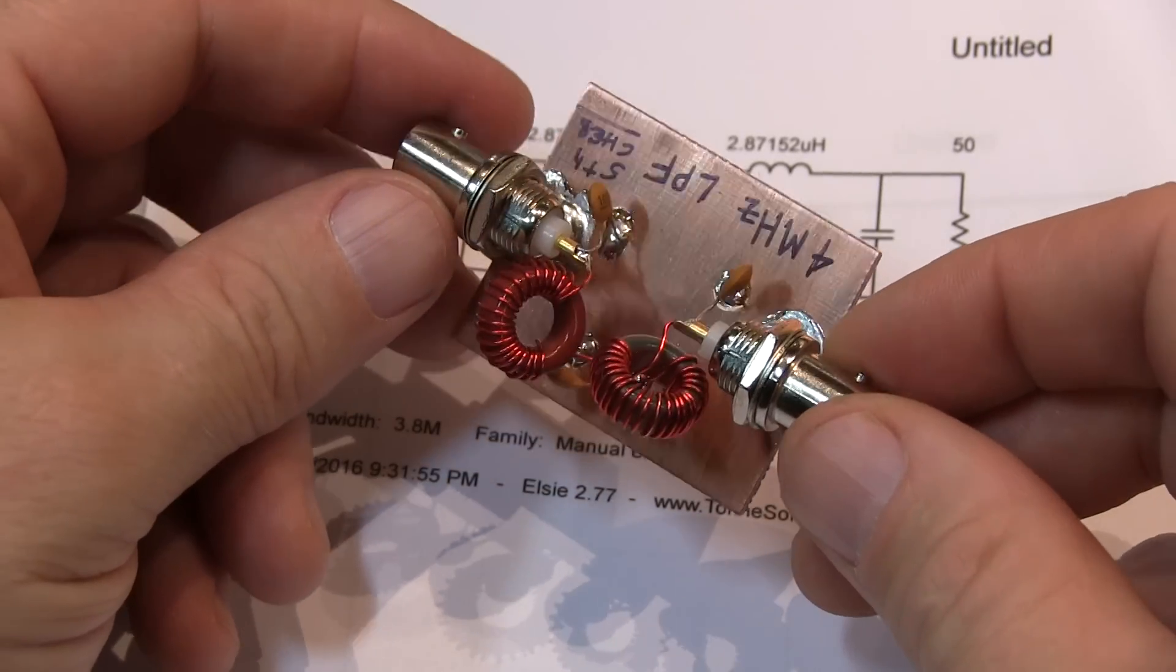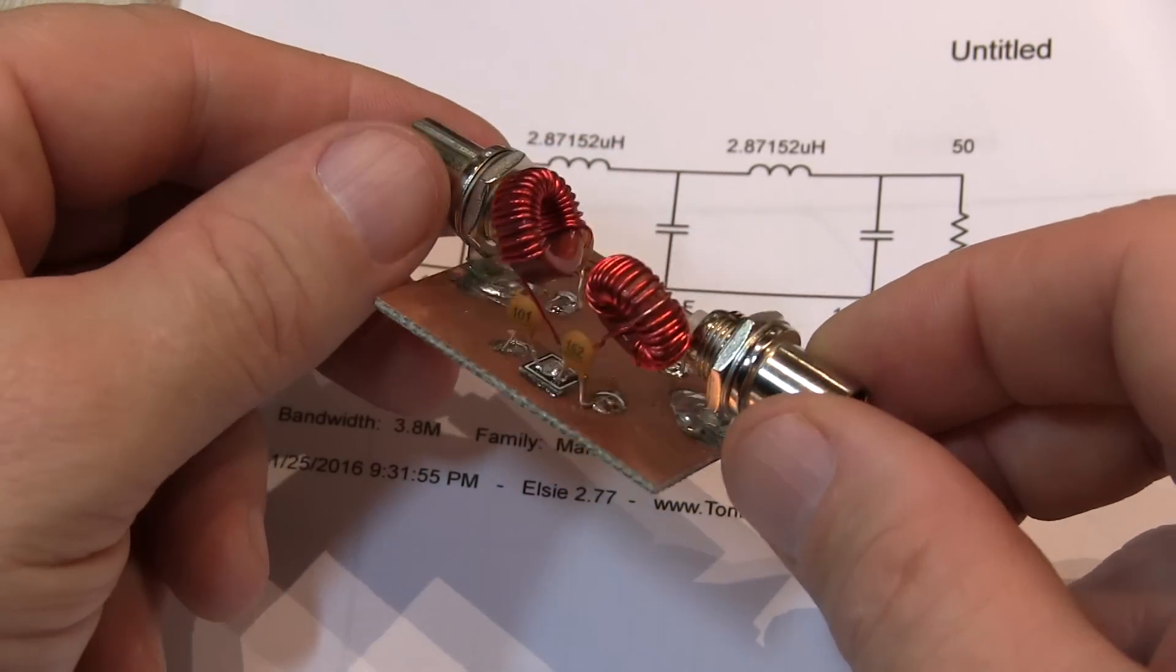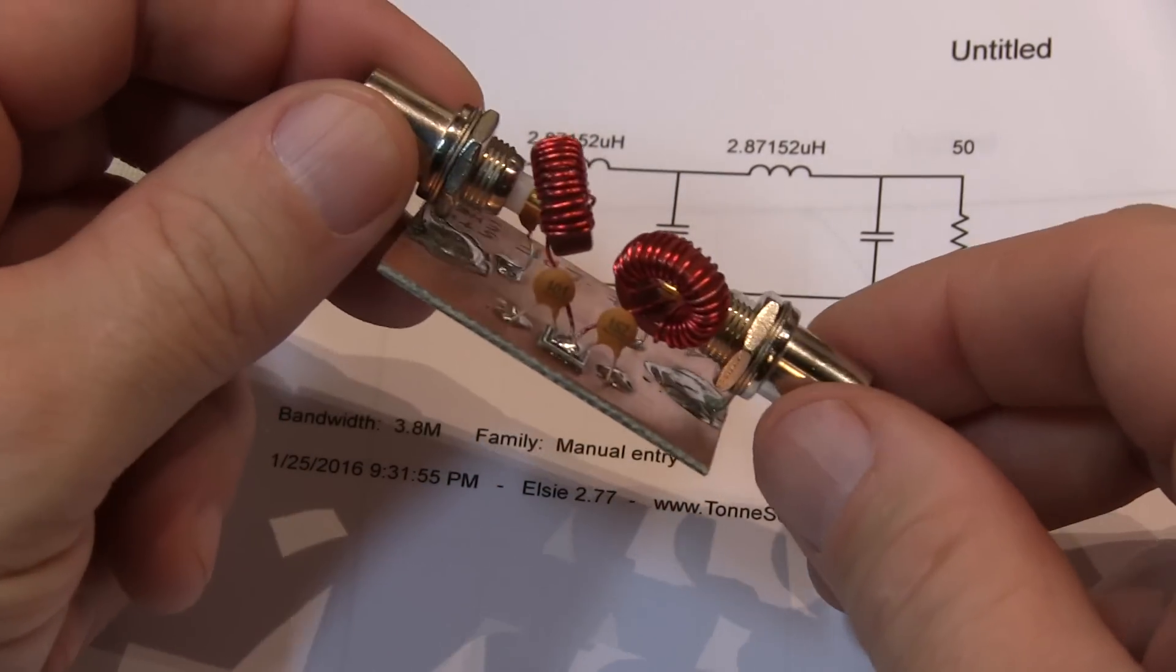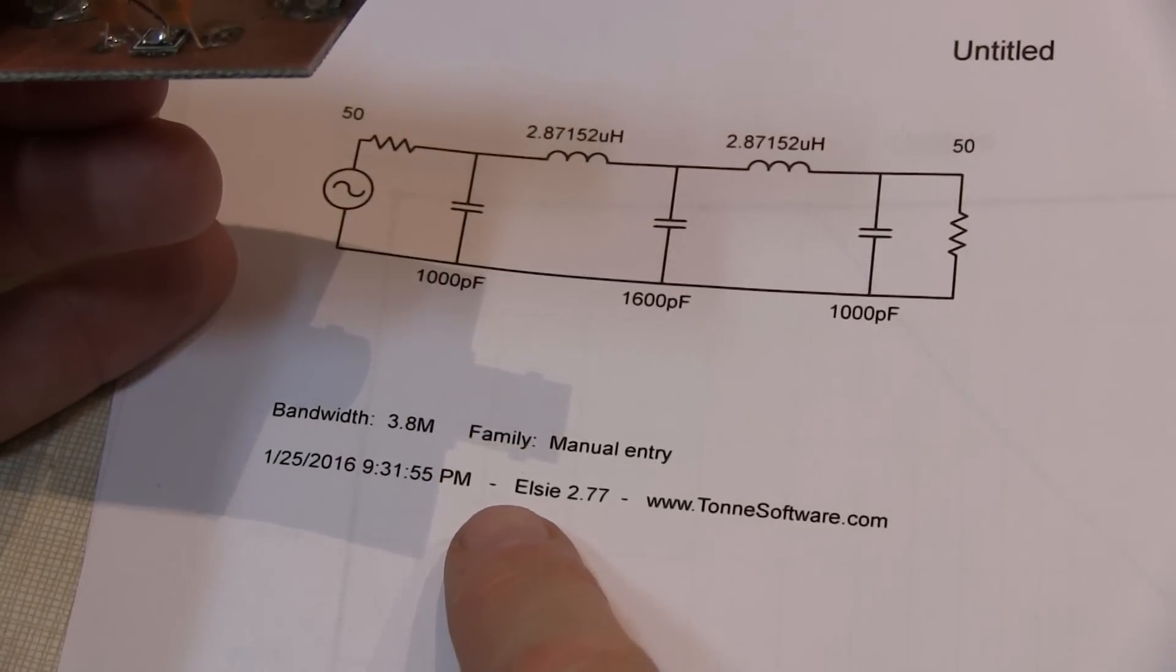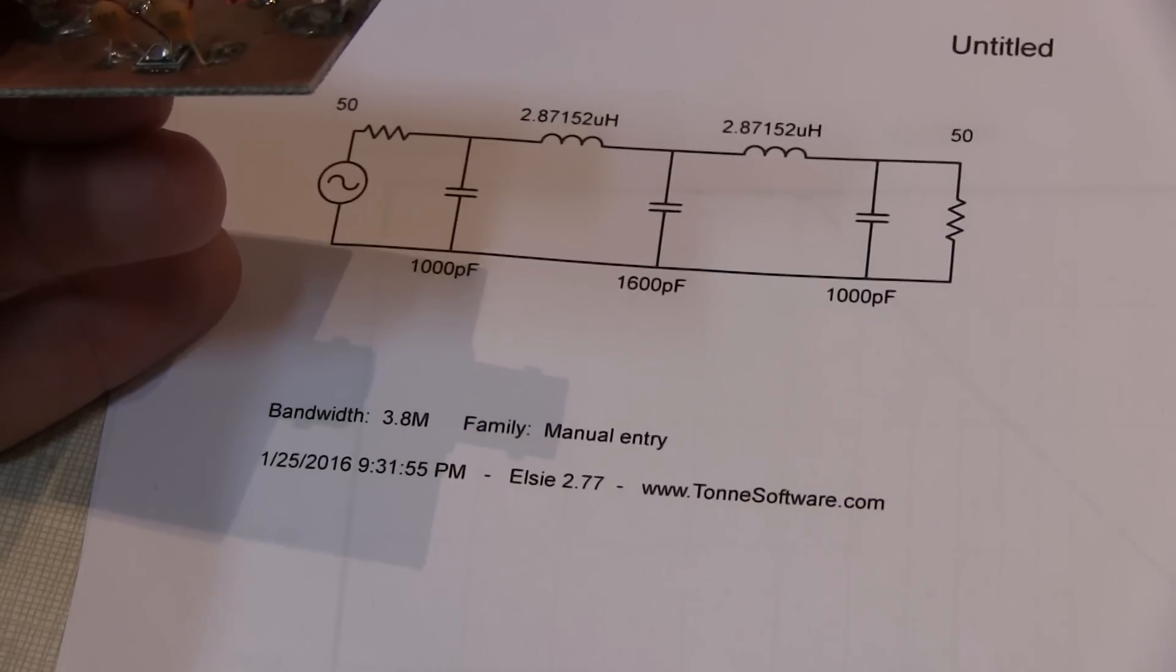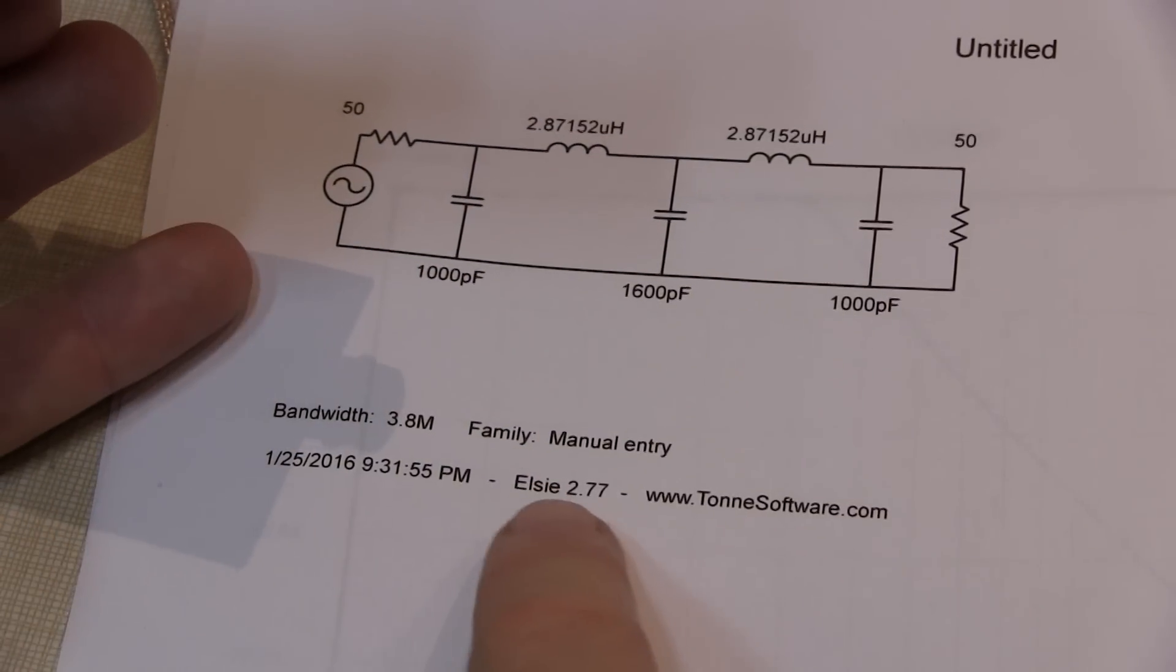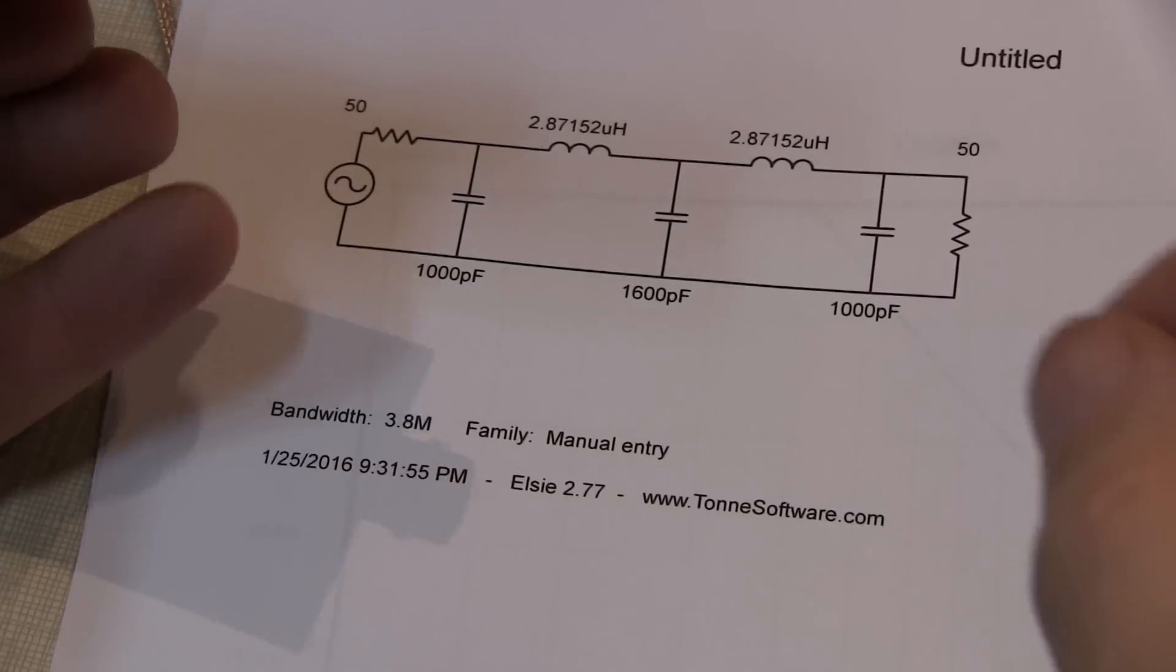It used to be that you had to look up all the tables and things like that to compute filter values and that kind of thing. But today, things are so much easier. I actually used a program called ELSIE. ELSIE sounds like the letters L and C, and that's by intention, of course, to design ELSIE filters. But the program is spelled ELSIE, and it's available from Tonne Software.